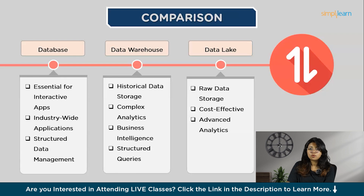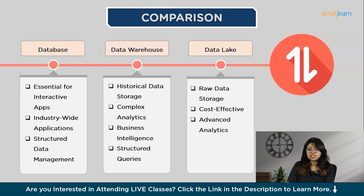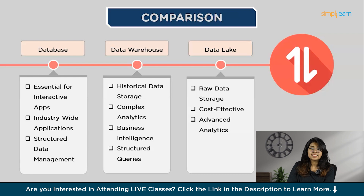Now let's recap the differences among the three. If your application needs to store data — which is essential for most interactive apps — having a database is crucial. Databases are fundamental across industries, providing an organized way to store, retrieve, and manage data. For instance, an online store uses a database to handle products, stock, and customer orders. A healthcare system relies on databases to manage patient information and medical histories. Even social media apps use databases to store user profiles and posts.